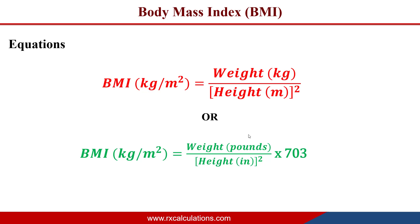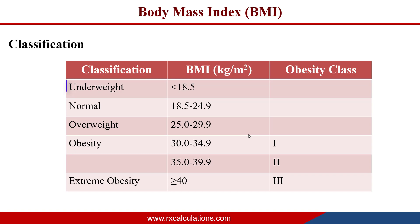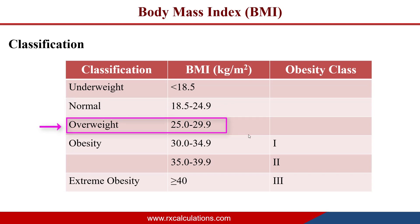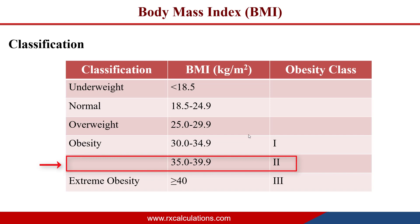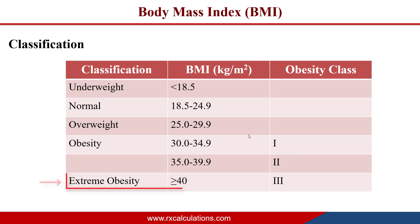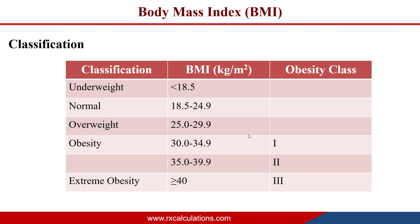Once you have the BMI, here is what it means. A BMI less than 18.5 indicates underweight; 18.5 to 24.9 indicates normal weight; 25 to 29.9 indicates overweight. At 30 or greater, the patient enters the realm of obesity. Class 1 obesity is 30 to 34.9; class 2 is 35 to 39.9; and class 3 — extreme obesity — is 40 or greater. It is important to refer to the classification whenever you calculate the BMI.